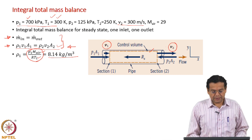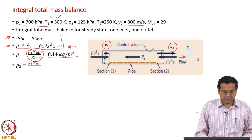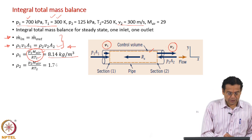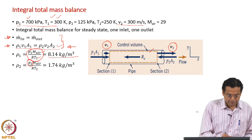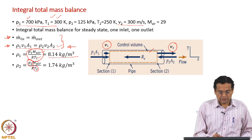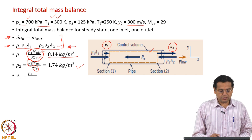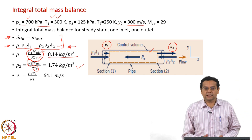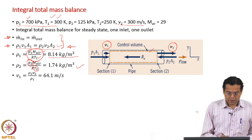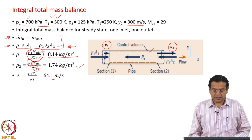The density is given by P·M/(R·T). Substituting the inlet pressure, inlet temperature, and molecular weight of air as 29, we get a density of 8.14 kg/m³ — roughly about 78 times the usual atmospheric air density. Similarly, we evaluate the density at the exit using absolute pressure and temperature in Kelvin, getting a density slightly above that of atmospheric air. Using the integral mass balance, with area canceling out, the inlet velocity is 64.1 meters per second.